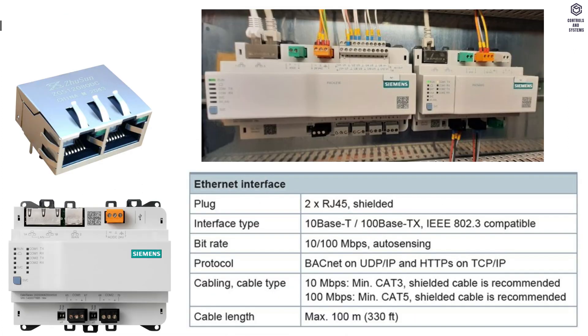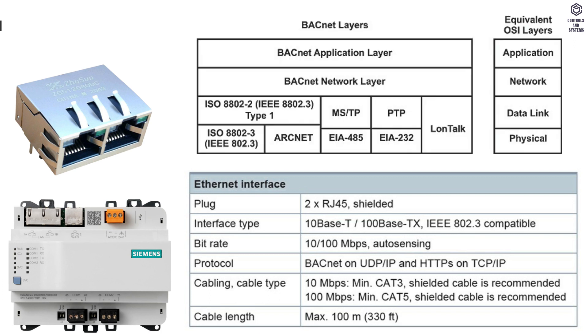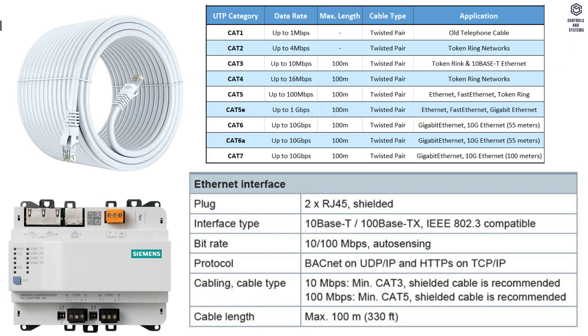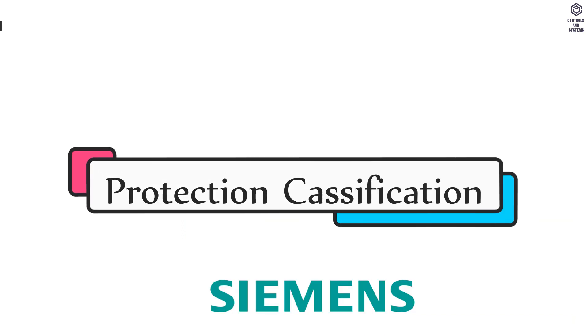Ethernet interface: this table shows the range of plug, including interface type, bit rate, protocol, cabling, cable type, and cable length.